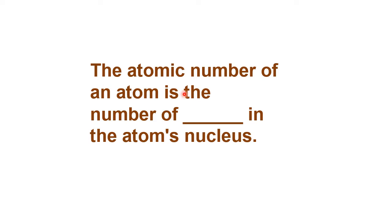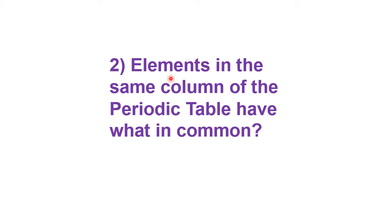Question one: The atomic number of an atom is the number of dash in the atom's nucleus. Please recall the atomic number definition and you will get the answer. Atomic number means it is the number of electrons or number of protons. Because electrons are involved in electronic transactions, the proton number is taken as the atomic number, and protons are located in the nucleus. So the answer is: protons.